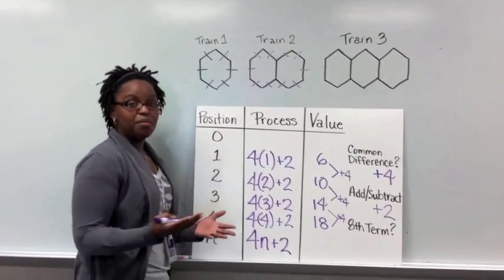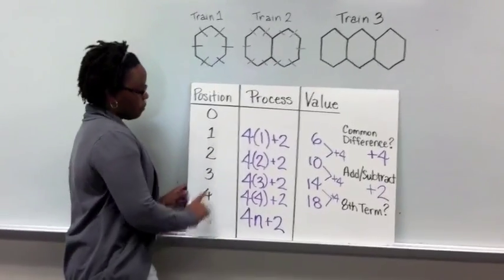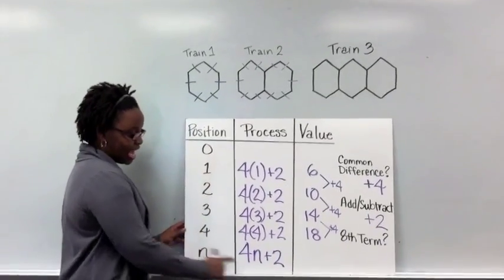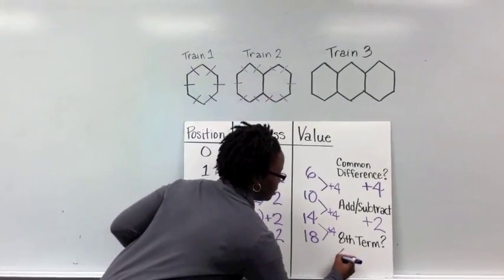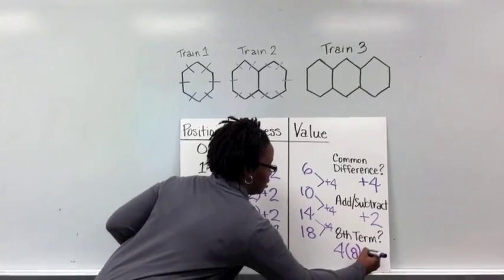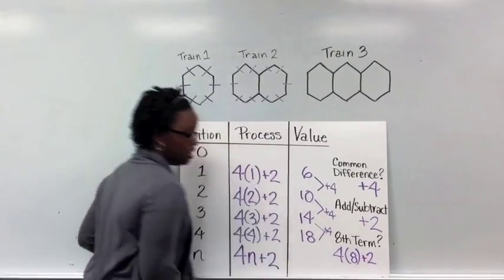So say I wanted to find the 8th train. Well because I know that train is the 8th position, all I would do is 4 times 8 plus 2.